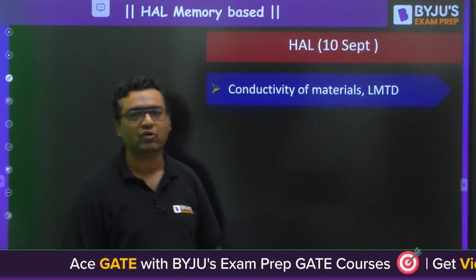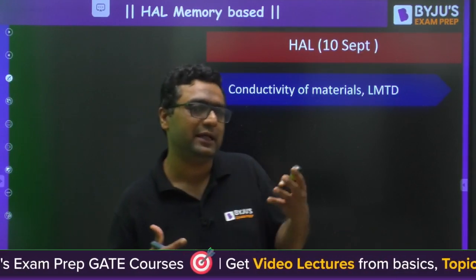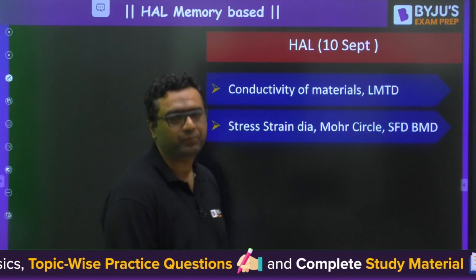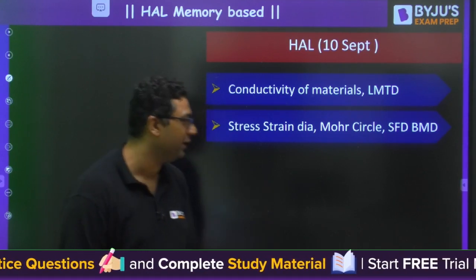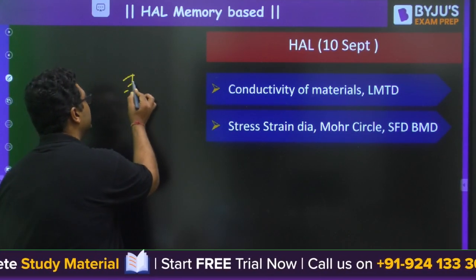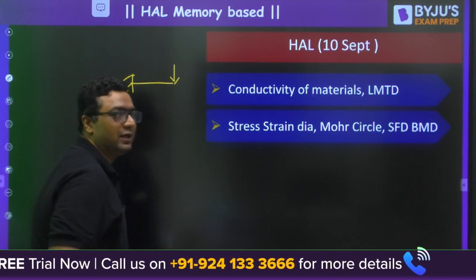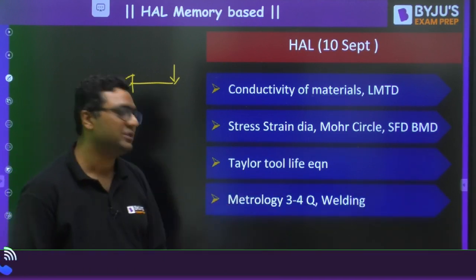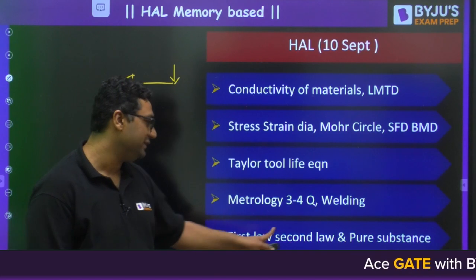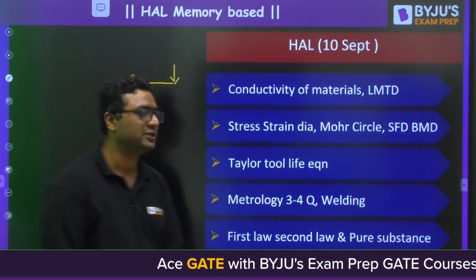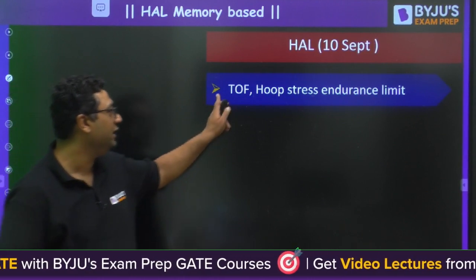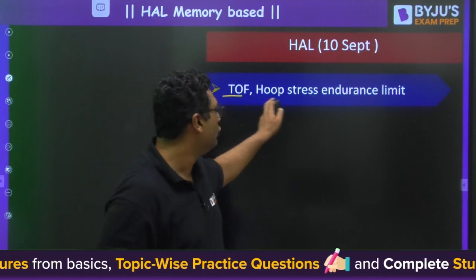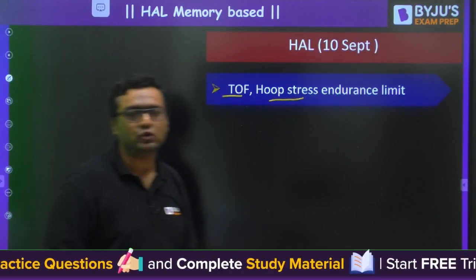Questions were also asked on boundary layer and conductivity of materials — for example, they gave some materials and asked for the increasing and decreasing order of conductivity. Theory of failure had at least one to two list-type questions where all the theories were written. Hoop stress and endurance limit also had questions.